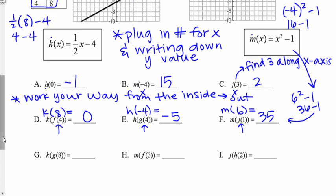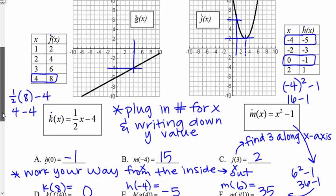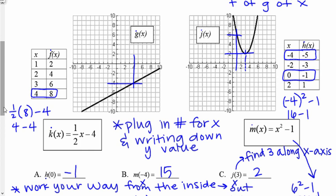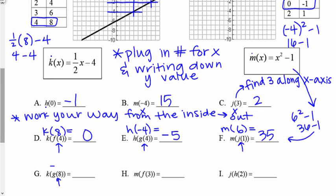k of g of eight: I'm first going to do g of eight. g of eight is negative two. Then I do k of negative two. k is that equation: one half times negative two minus four. One half times negative two is negative one, minus four gives me negative five.